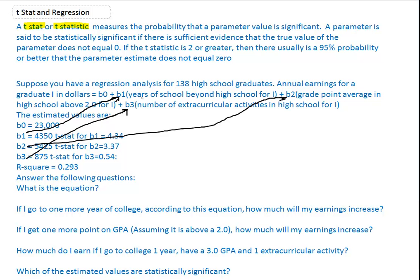So we can be fairly certain, 95% certain, that B1 does not actually equal 0. Zero would imply years of schooling beyond high school have no effect on your annual earnings. Hopefully, years beyond high school does have an effect.